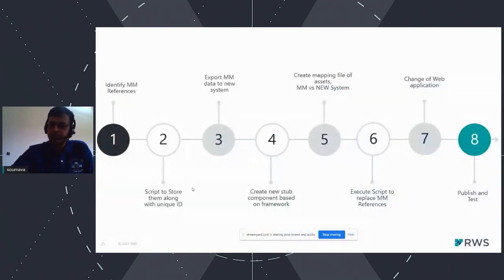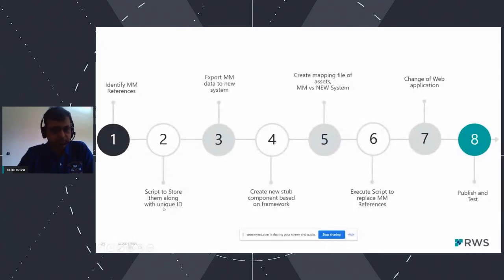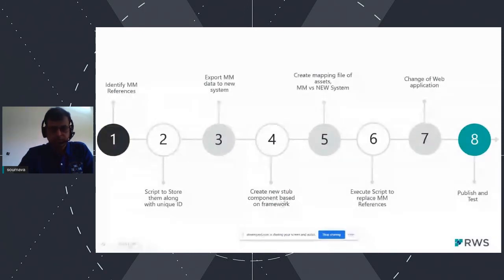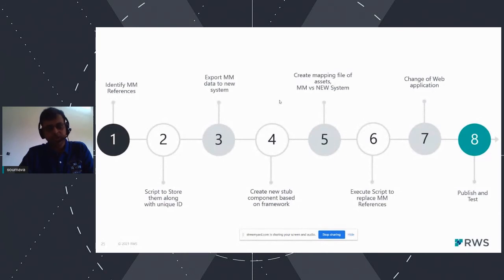These are the eight high-level steps followed. First, identify MM references in the components. Second, store them along with unique IDs within a CSV file — the unique ID is very important since all MM assets come with a unique ID and we can query back to the Media Manager database to retrieve the corresponding media file name, title, or other details. Third, export MM data to the new system, Widen. Fourth, create stub components based on the connector framework within Tridion for the Widen system.